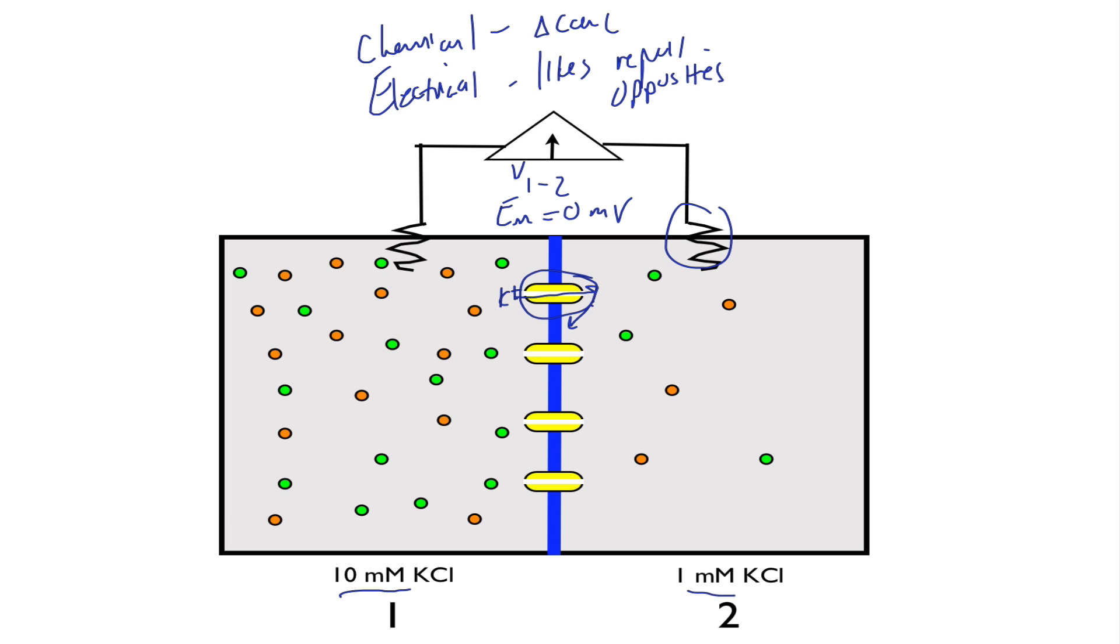In the beginning, we're going to have all chemical driving force. There's a ten-time difference in concentration between compartment one and compartment two. So we're going to have K ions, potassium ions, moving from one to two. That's the driving force. Potassium is going to move to compartment two through the ion channel. Now, note, the chloride anions are going to stay behind. They can't move through these channels, only potassium. So we're going to get potassium moving from compartment one to compartment two.